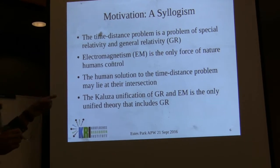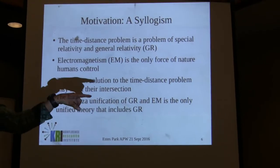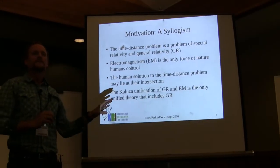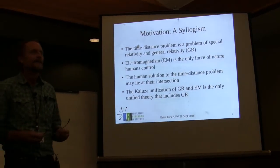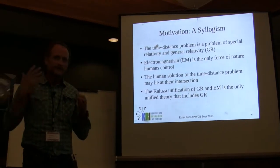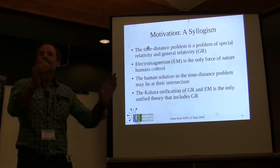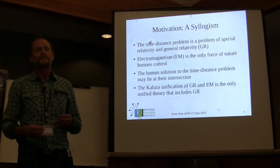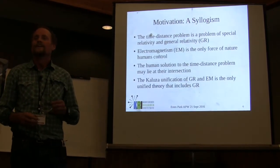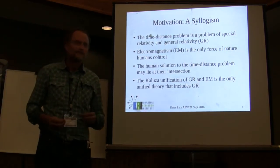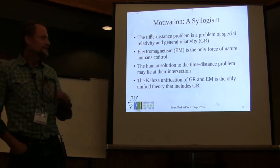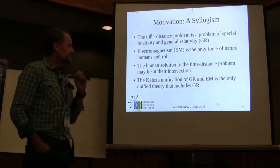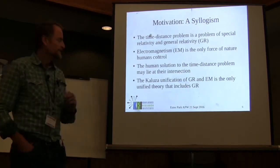The Kaluza theory is just that. There was a theory that goes back to 1919 - that's when Kaluza sent his paper to Einstein. Einstein sat on it for two years, trying to wrap his head around it, and eventually published it. It was published in 1921. Back in those days, you couldn't submit on your own unless you were of a certain stature. Einstein actually submitted Kaluza's paper in 1921 - a unified theory of general relativity and electromagnetism.